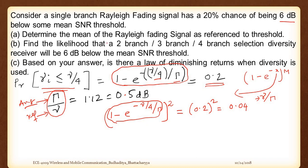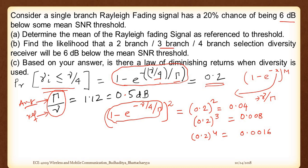When we have 3 branches it is 0.2 to the power 3, which equals 0.008. When it is 4 branches, it is 0.2 to the power 4, giving 0.0016. So these are the different probabilities of failure for different numbers of branches - 0.2 for one branch (no diversity), 0.04 for two, 0.008 for three, and 0.0016 for four branches.